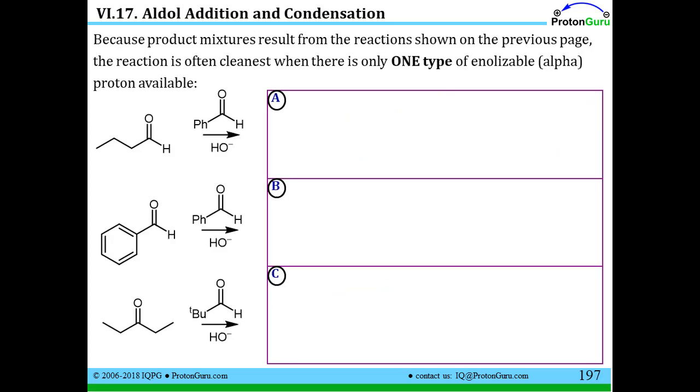Some improvements can be made if you think about using one coupling partner that doesn't have any alpha H's to take off. If you think about drawing it out, that alpha carbon has no H's to be taken off. And if we use an aldehyde, there's no carbon with H's to make the resonance stabilized enolate. So aldehydes or phenyl-substituted carbonyls or t-butyl-substituted carbonyls are good examples of compounds that do not have any alpha H's that are enolizable.